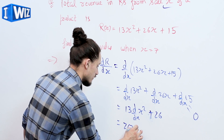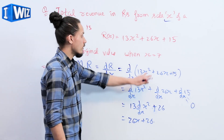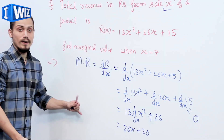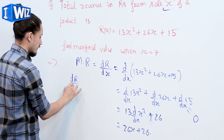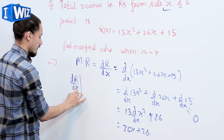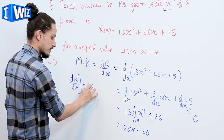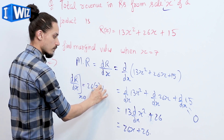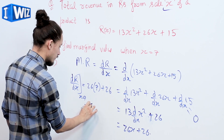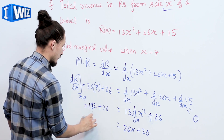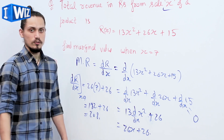So d/dx of R equals 26x plus 26. We have to find its value at x equals 7, so marginal revenue at x equals 7 is 26 times 7 plus 26, which equals 182 plus 26, which equals 208 rupees.